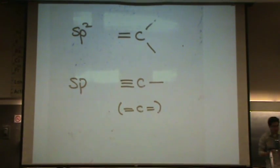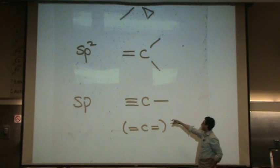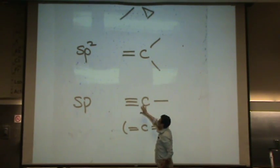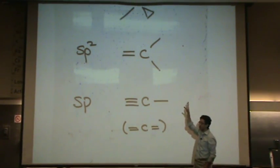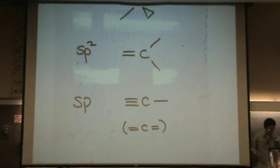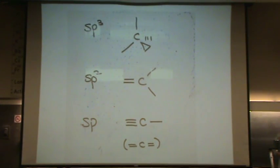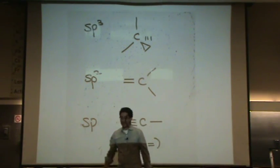So notice carbon always has four bonds. Write that down. It could be one, two, three, four - so a triple and a single, or four singles, or a double and two singles. These are the templates for what carbon could look like. Okay, we'll take a little break there and resume next week with organic chemistry.